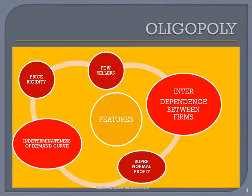The firms will have to spend money on advertising and selling costs. The demand curve shows what amounts of its product a firm will be able to sell at various prices. Under oligopoly, a firm cannot assume that its rivals will keep their prices unchanged when it makes changes in its own price. Hence the demand curve of an oligopolistic firm keeps shifting as rivals change their prices in reaction, and there is no definiteness of the demand curve.